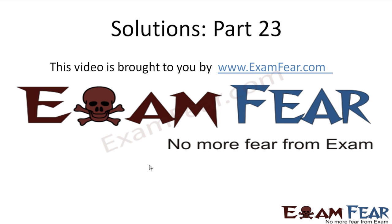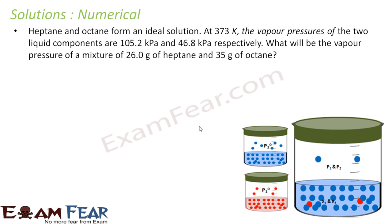Hello friends. This video on solutions part 23 is brought to you by examfear.com. Heptane and octane form an ideal solution. At 373 Kelvin, the vapor pressure of the two liquid components are given. What is the vapor pressure of the mixture of 26 grams of heptane and 35 grams of octane? Pretty easy question.